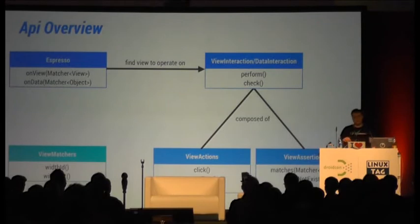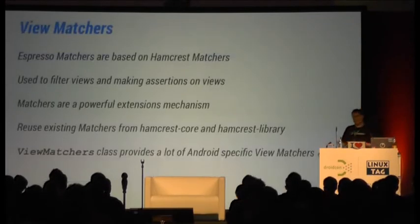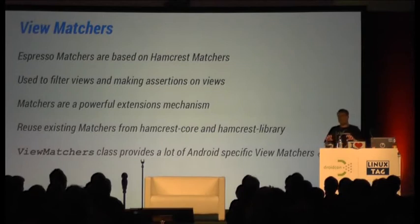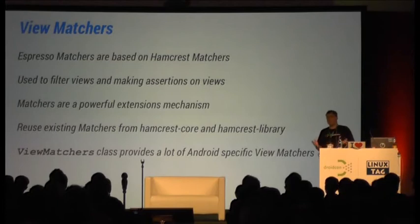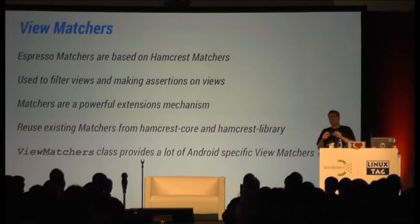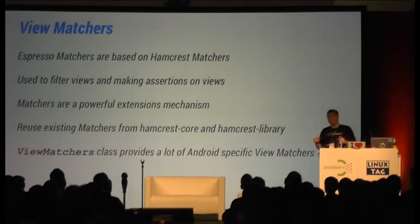As you saw in the example, there's some more magic involved, and this mostly comes from matchers. Espresso re-uses Hamcrest matchers — which is probably the most popular matching library for unit testing in Java, and many Android developers use it as well. Espresso extends that API, which makes it very powerful because you can extend it easily, and you can also re-use all the existing matchers that are already out there.